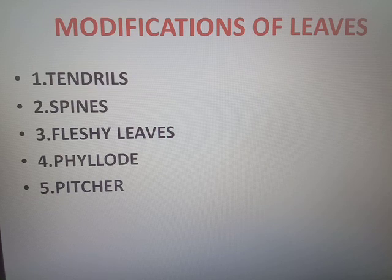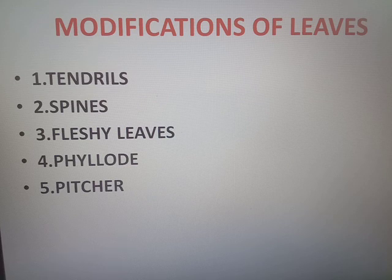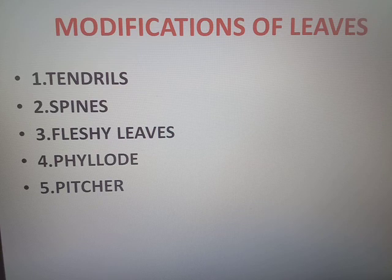The next modification is the pitcher plant. The leaf lamina is modified as a pitcher to catch insects. Pitcher plant is an example of an insectivorous plant. Examples of insectivorous plants are Nepenthes and Venus flytrap. In Nepenthes, the petiole portion is modified into a tendril and the lamina is modified into a pitcher. These are the modifications of the leaves.